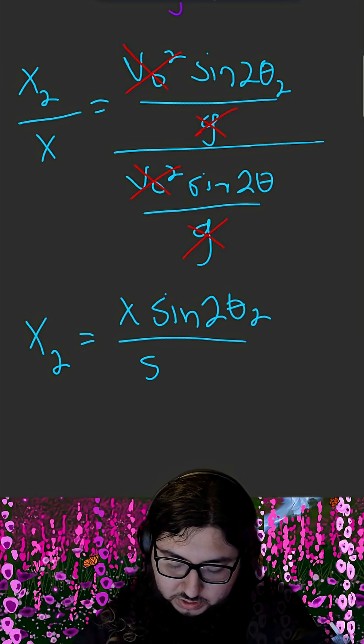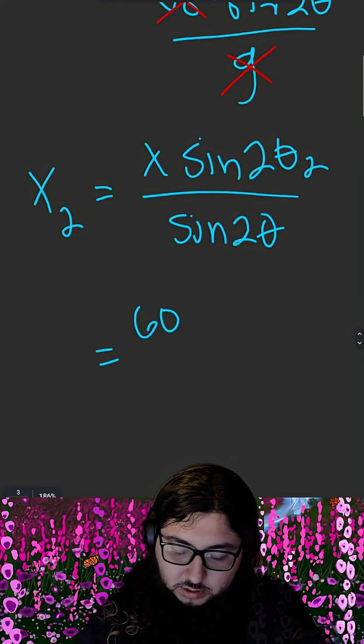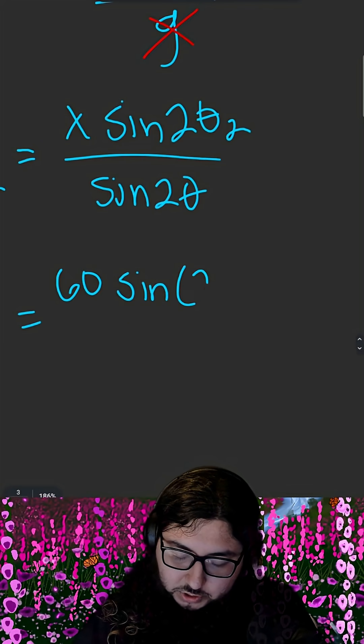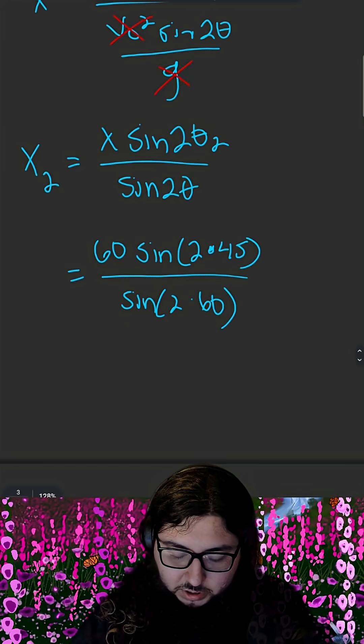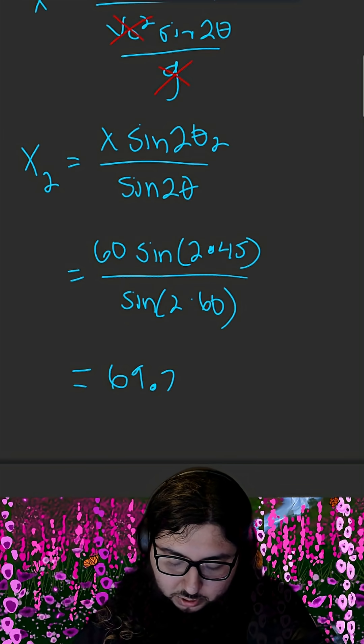And then we're just left with x2 is equal to x sine of 2 theta sub 2 over sine of 2 theta. So we know x is 60 sine of 2 theta sub 2, 2 times the 45 degree angle over sine of 2 times our 60 degree angle. Plugging this into a calculator gives us 69.2 yards.